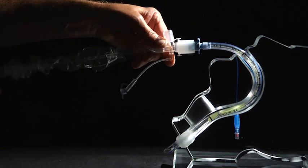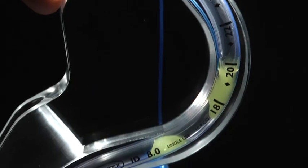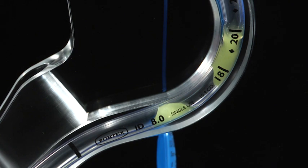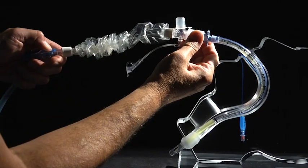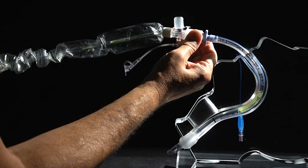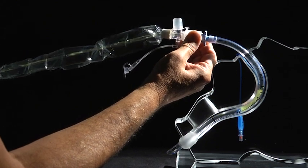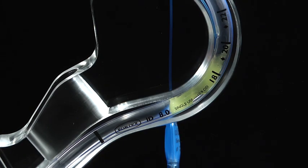The first pass of the suction catheter removes some secretions, but also mobilizes them so if left behind, they can migrate into the distal lung fields. The second pass also leaves secretions behind that would not be visible in the patient like they are in this see-through head model.